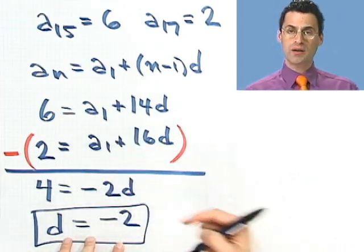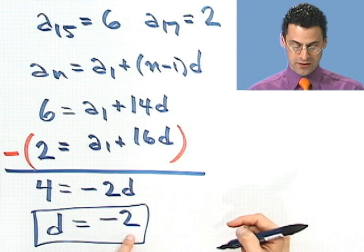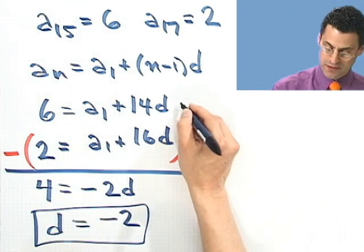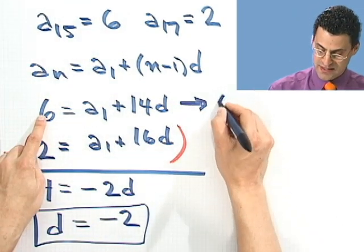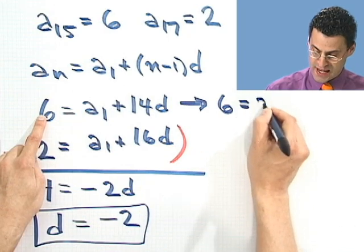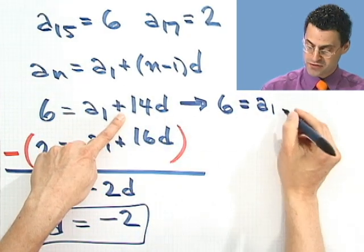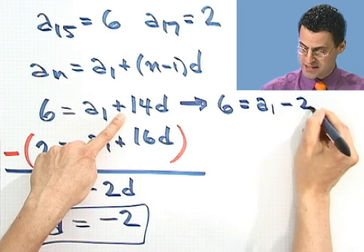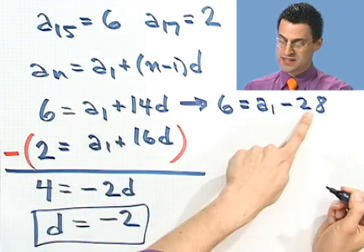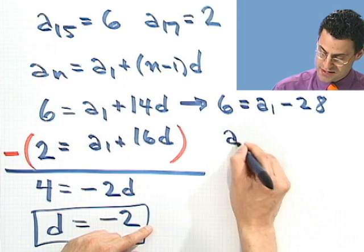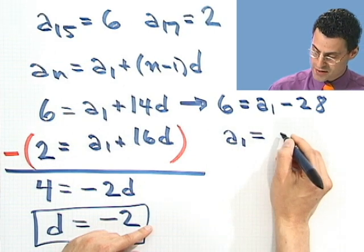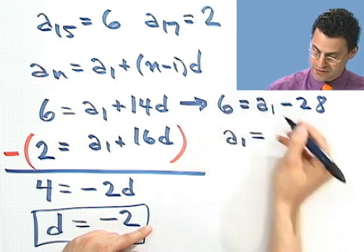And then what would a1 be? Well, I would just take negative 2 and plug it back into one of these things here. If I plug it back into here, for example, I would see that 6 equals a1 plus negative 2 times 14, which would be minus 28. So if I take minus 28 and bring it to that side, I see that a1 equals 34.